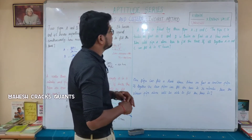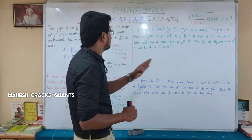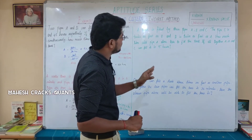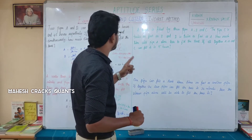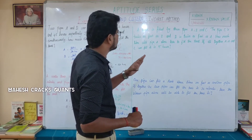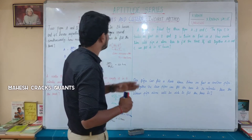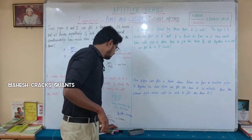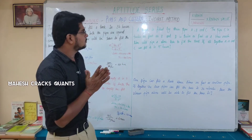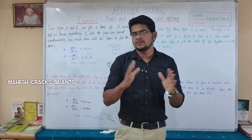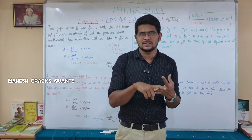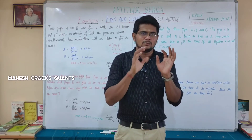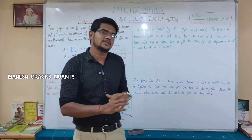Next question: A tank is filled by three pipes A, B, and C. Pipe C is twice as fast as B, and B is twice as fast as A. How much time will pipe A alone take to fill the tank if together A, B, and C can fill it in 5 hours?